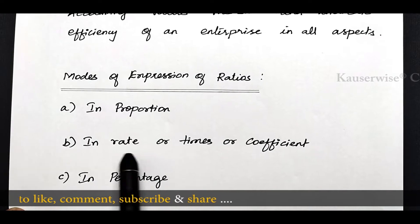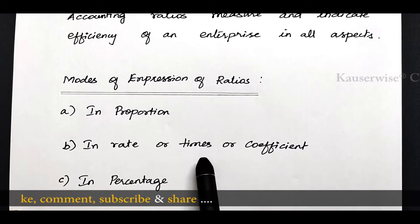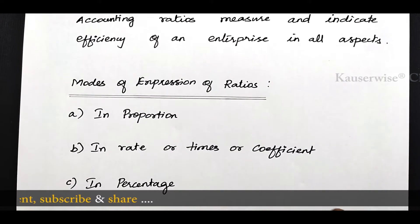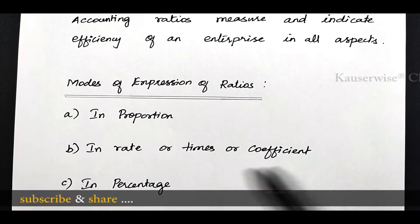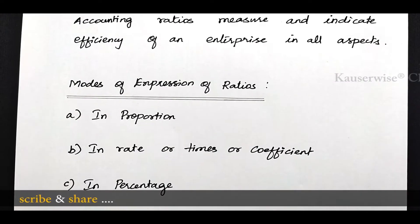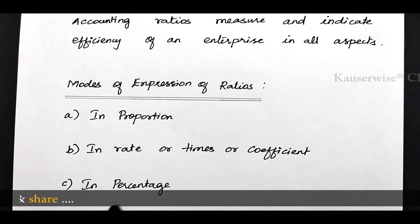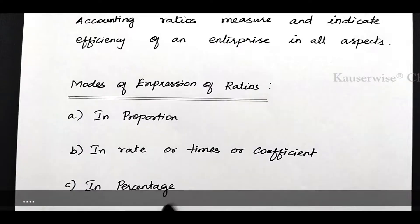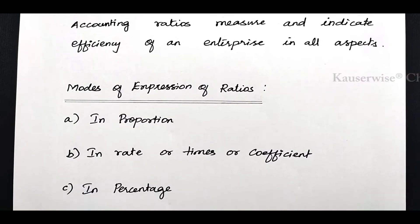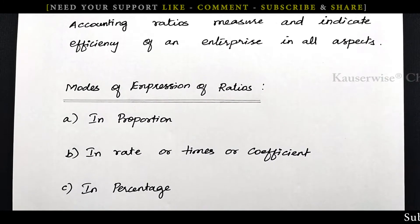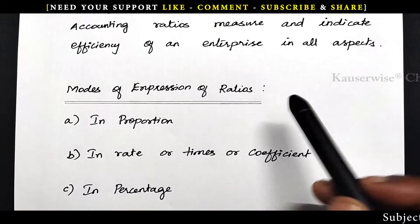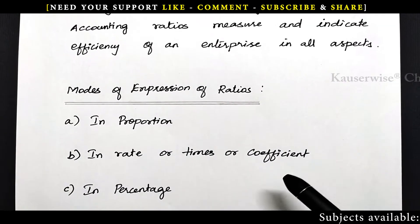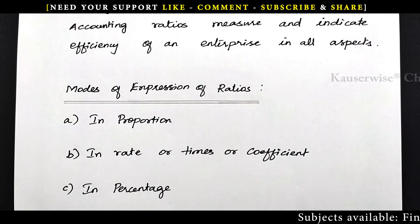The second mode of expression is in rate, or times, or coefficient — meaning the answer will be like 2 times or 3 times. The third one is in percentage, like 10 percentage, 20 percentage, 50 percentage. These are the 3 different modes of expression of ratios.